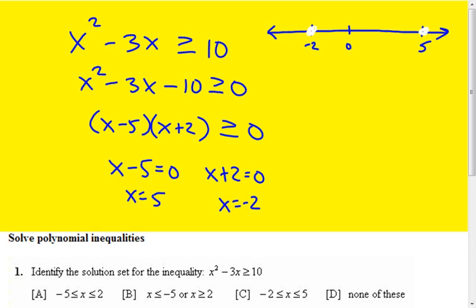Now it's a matter if region one is included, region two is that included, and region three is that included. What we need to do is test those regions with some number left of negative two, so that would be like negative five.